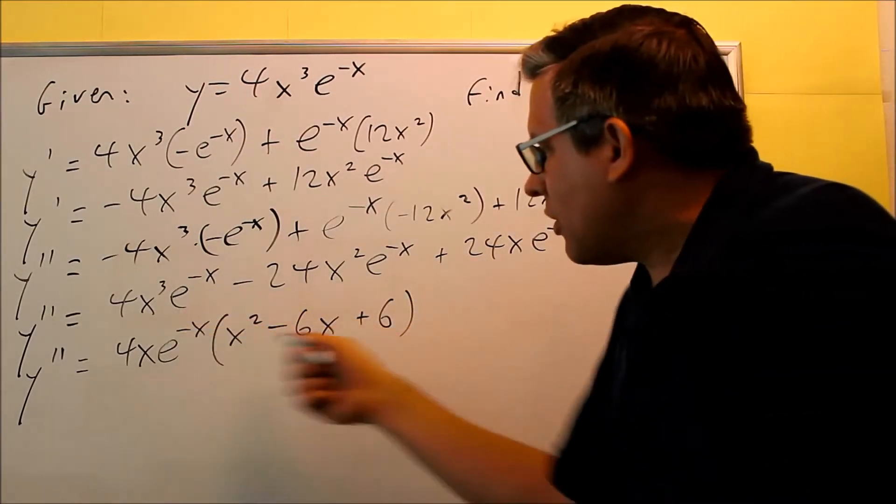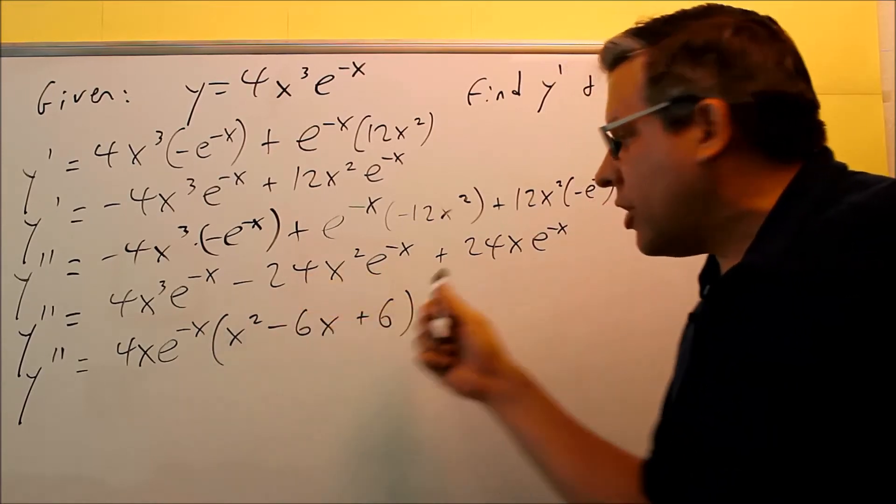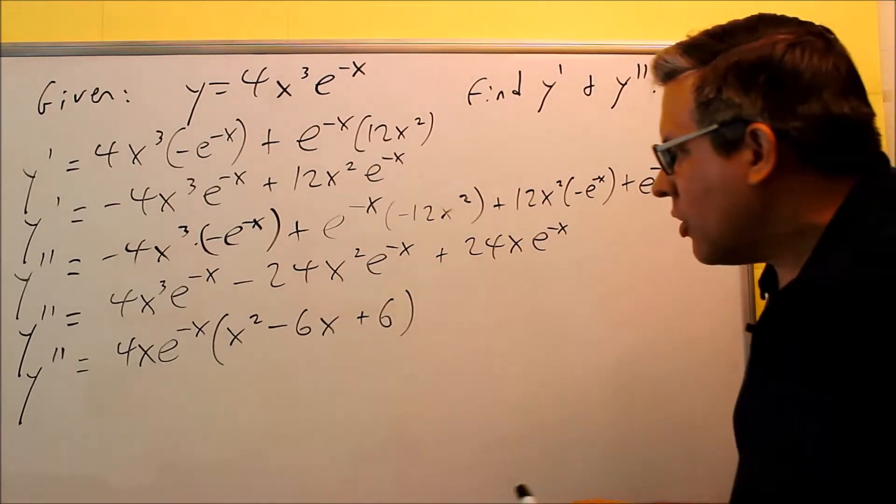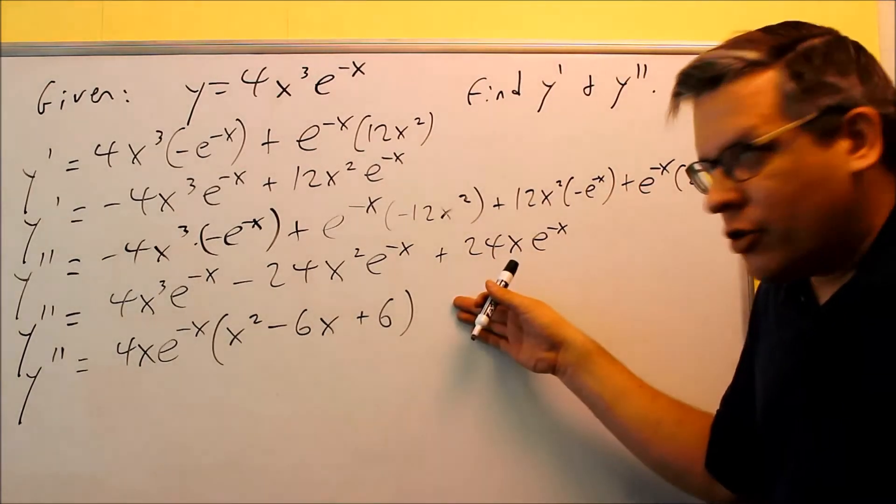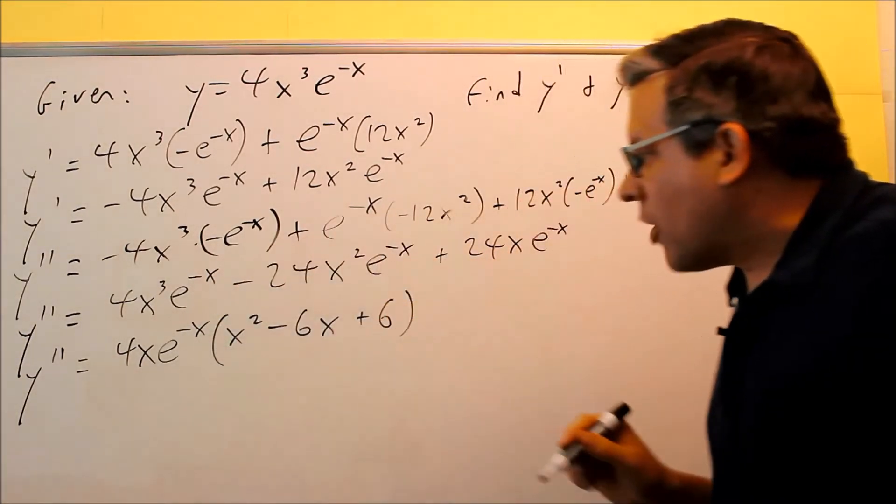And then, this is going to be it. This is as far as you can go because this term right here, that can't be factored. So, that would be the answer that you could put in online when you enter your homework. This answer is the factored form.